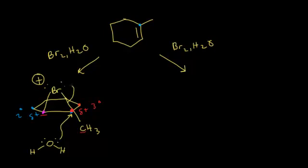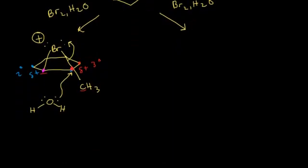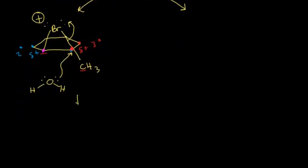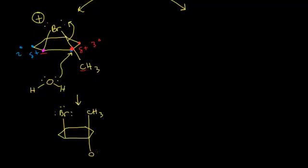When water attacks the carbon on the right, these electrons kick off onto the bromine. Drawing the result: the ring remains, bromine swings over to the carbon on the left with three lone pairs. The methyl group that was down gets pushed up by the water nucleophilic attack — so the methyl group is now up. The oxygen is now bonded to this carbon, still with two hydrogens and a lone pair giving it a plus one formal charge. Those electrons formed this bond.